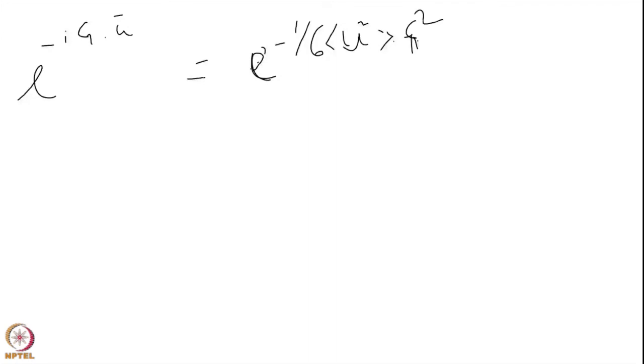Now my form factor has this factor, and the intensity is the square of that. So I will have I equal to I zero times e to the power minus 2 times 1/6, which is 1/3 g square u square. That means that my intensity at 0 kelvin, if it is I zero, it gets diminished by a factor e to the power minus 1/3 g square u square.